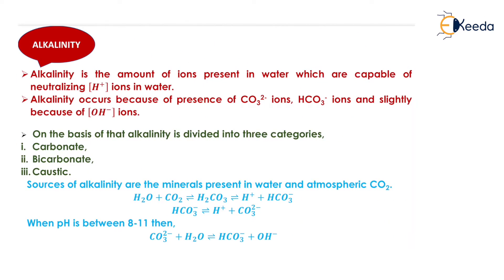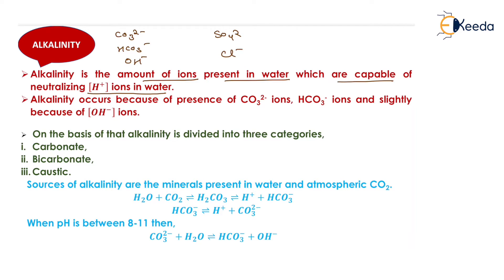Moving on to alkalinity: alkalinity is the amount of ions present in water that are capable of neutralizing H⁺ ions. Ions such as carbonate CO₃²⁻, bicarbonate HCO₃⁻, OH⁻, SO₄²⁻, and Cl⁻ are present in water. When H⁺ is added, carbonate forms H₂CO₃, bicarbonate forms H₂CO₃, and OH⁻ forms H₂O; while SO₄²⁻ forms H₂SO₄ and Cl⁻ forms HCl.